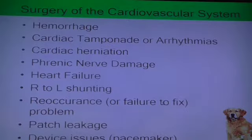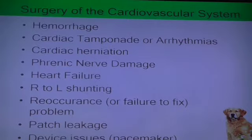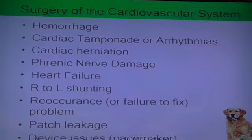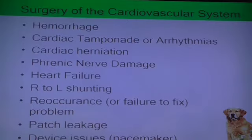For cardiovascular system complications: obviously hemorrhage can occur with any surgery. You can also get cardiac tamponade or arrhythmias, and cardiac constriction - especially if a pericardectomy isn't made large enough. Other complications include phrenic nerve damage, heart failure, left or right shunting, recurrence, failure to fix the primary problem, and patch leakage in cardiovascular surgeries requiring patches - though those are typically done only by specialist cardiac surgeons.